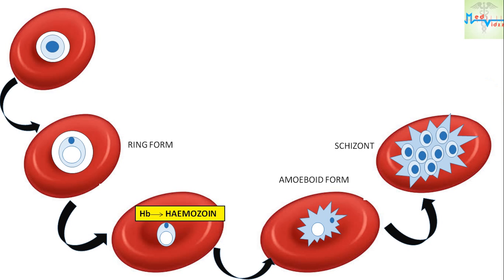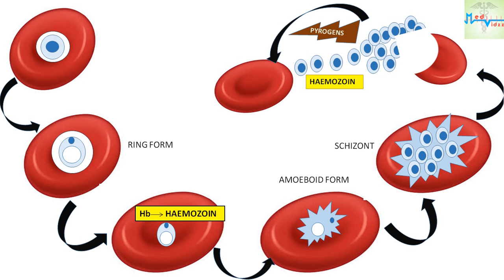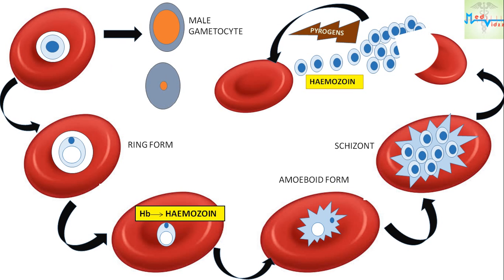The mature schizont then bursts, releasing merozoites, hemozoin, and pyrogens into circulation. These pyrogens are responsible for fever. The merozoites invade fresh erythrocytes, within which they go through the same process of development. After a few erythrocytic cycles, some merozoites that infect RBCs do not proceed to become trophozoites or schizonts, but instead develop into sexually differentiated forms — the male and female gametocytes. The gametocytes are then taken up by mosquitoes when they feed on human blood.